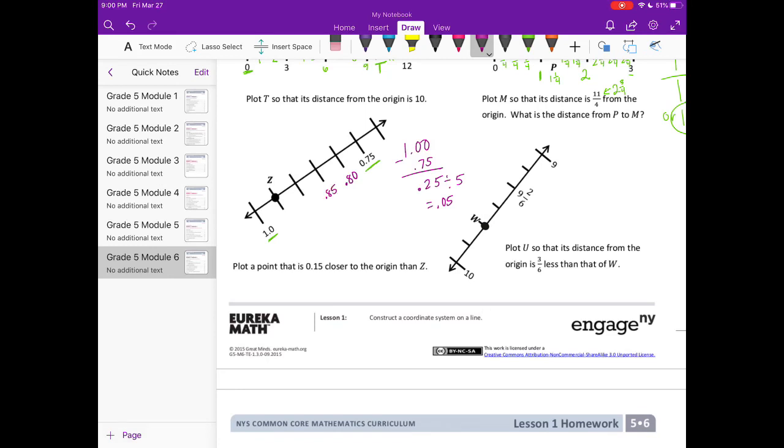Add another 5 thousandths. 85, 90, 95 thousandths. So those are the tick mark measurements. We're looking to plot a point that's 1 hundredth closer to the origin than Z. So Z, you can see,